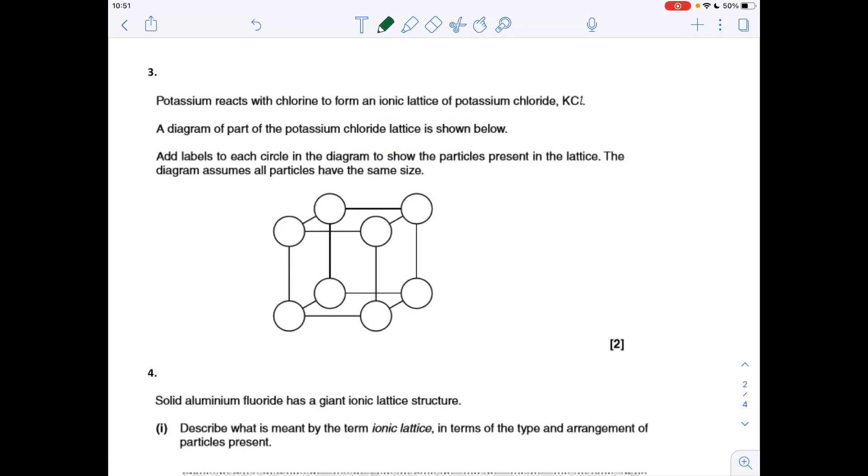Question three, we've got to add labels to each circle in the diagram to show the particles in the lattice. Well, potassium chloride contains the K+ ion and the Cl- ion, so all we've got to make sure is that these alternate. If we put a K+ there, it means we need a Cl- there, and therefore a K+ there and a Cl- there, and then we just repeat that on the lower level, so K+ Cl-.